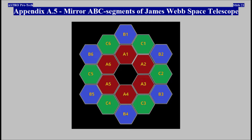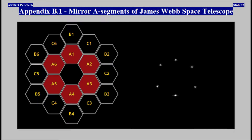Appendix A5: mirror B segments and mirror ABC segments of James Webb Space Telescope shown. Mirror A segments of James Webb Space Telescope shown.